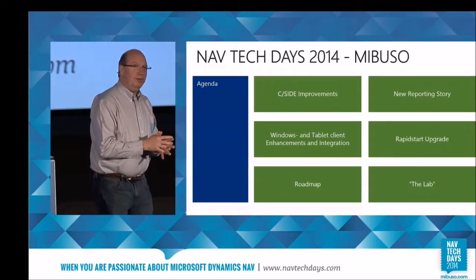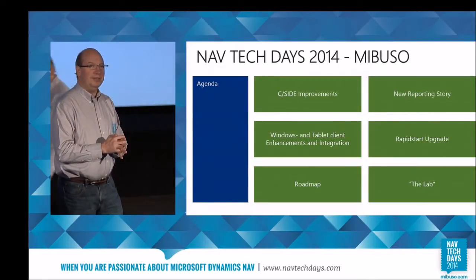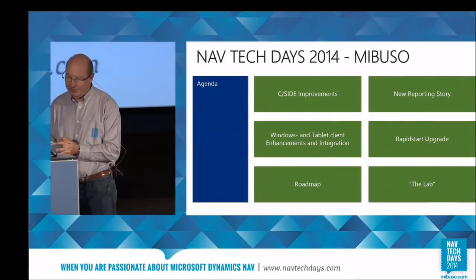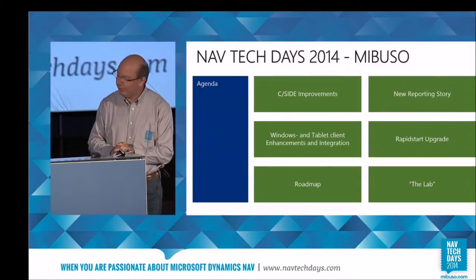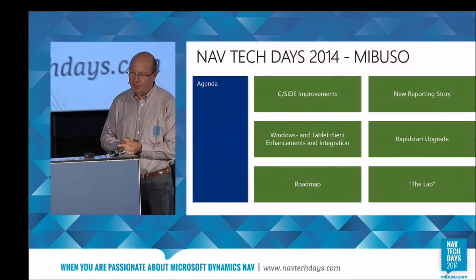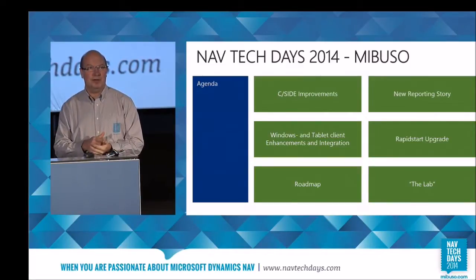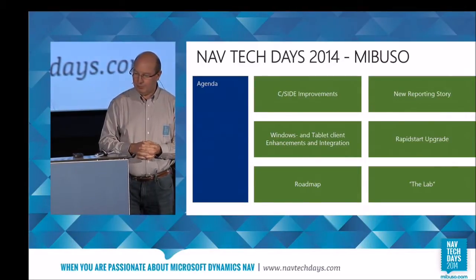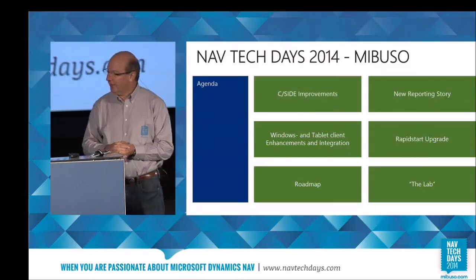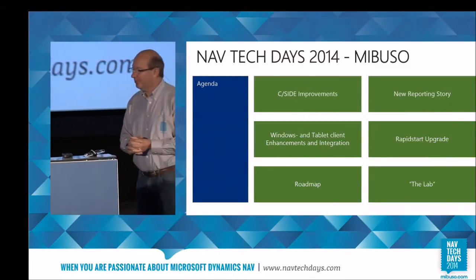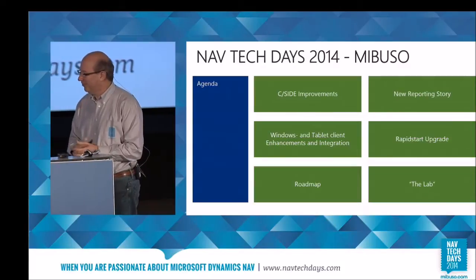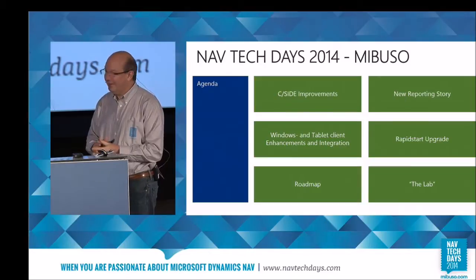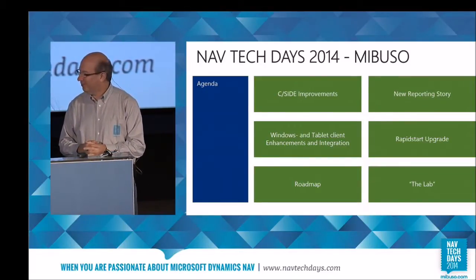Those of you who have been here before know that we usually have a long agenda and won't make it through half of it. So this year we're going to cheat a bit and show the topics we're going to look at: Seaside improvements, a new reporting story, something about the client architecture, a new big thing about upgrade, and also the roadmap for moving forward. We're also going to show you some stuff that might make it into the product — it's in whiteboard form right now, but it's a big thing we want to explore.